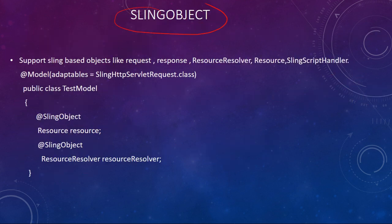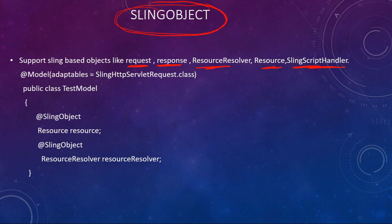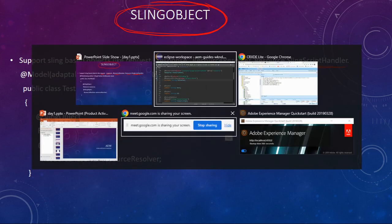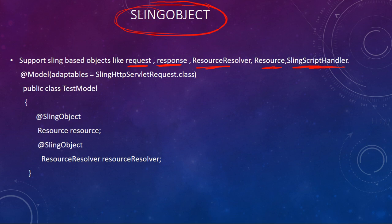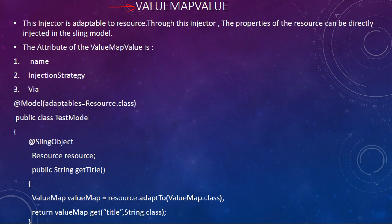Next is @SlingObject. If you want to define request, response, ResourceResolver, Resource, or SlingScriptHelper objects in your Sling Model, use @SlingObject. These are sling-related objects — sling is responsible for executing your nodes in CRX/DE, similar to how a compiler works in Java.